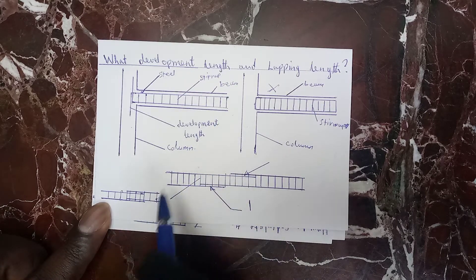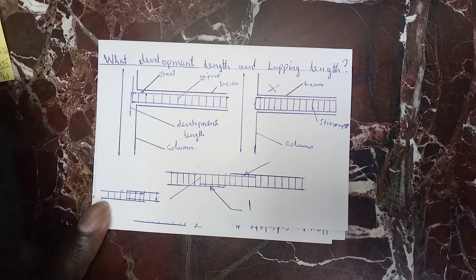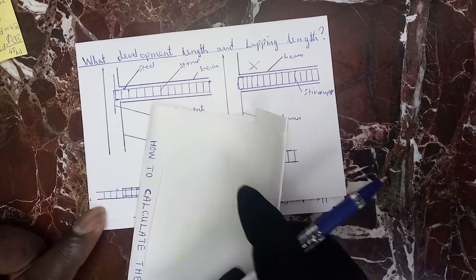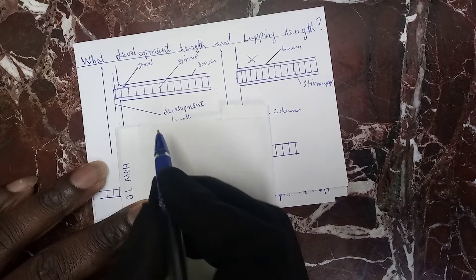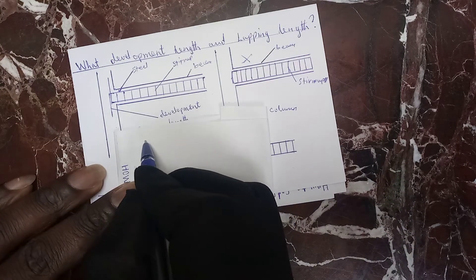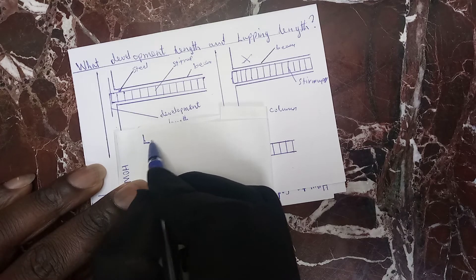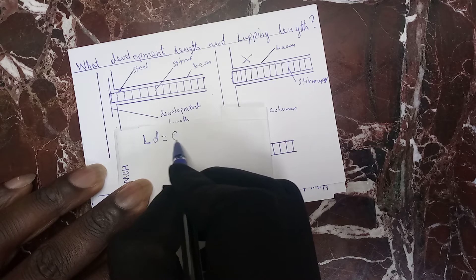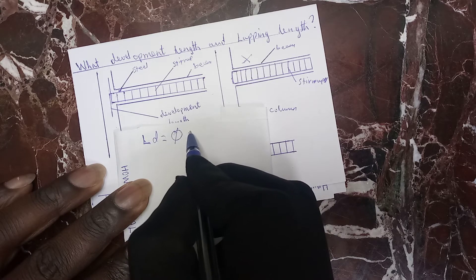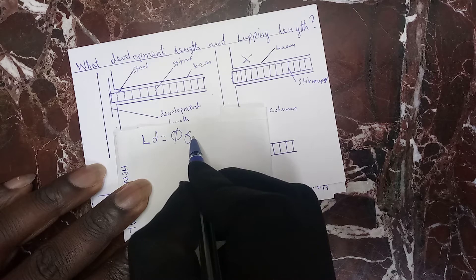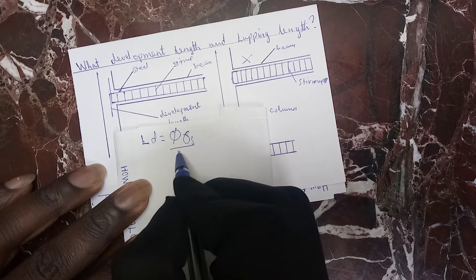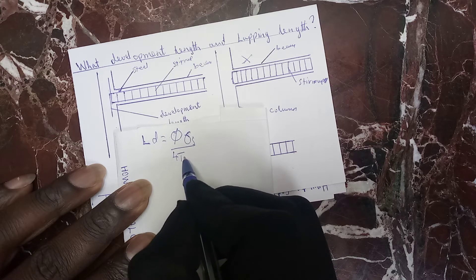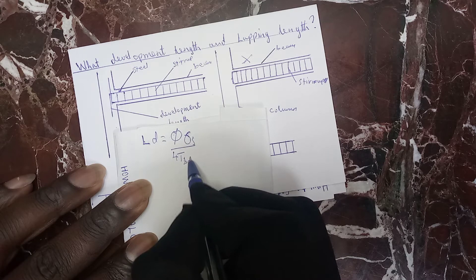To look for the formula for development length: LD is equal to the diameter of the rod times stress, divided by 4 times τBD.